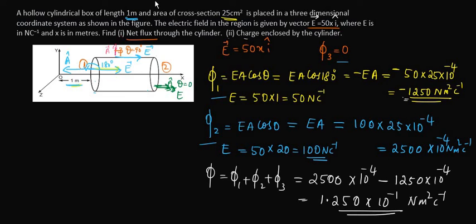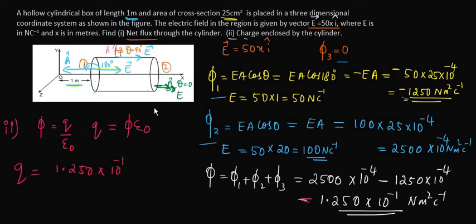Now for the second part of the question: find the charge enclosed by the cylinder. According to Gauss's law, total flux phi equals q divided by epsilon 0, so q = phi times epsilon 0. Substituting the net flux of 1.250 × 10⁻¹ and epsilon 0 = 8.854 × 10⁻¹², we get the final charge as approximately 1.1067 × 10⁻¹² coulombs.